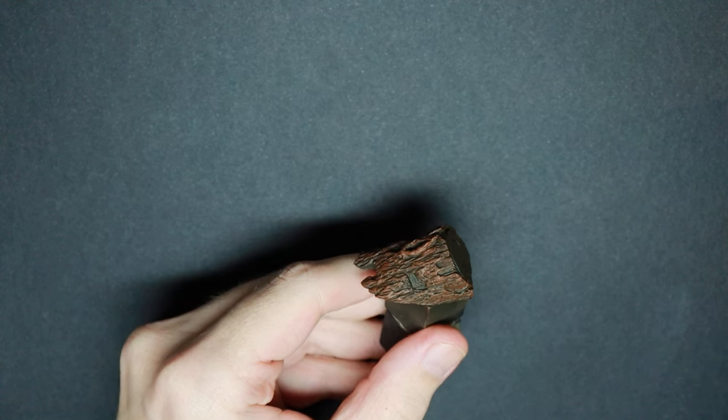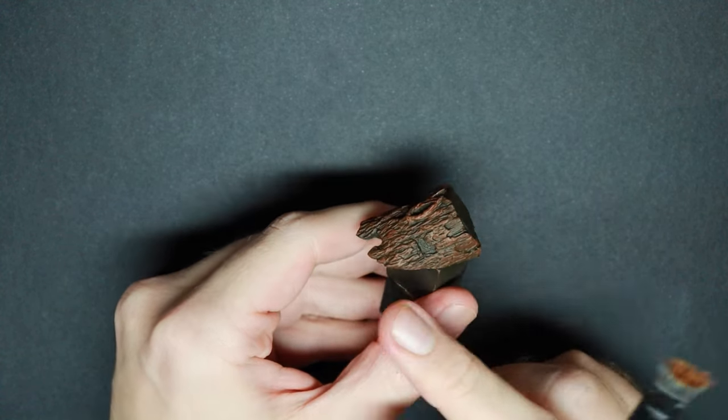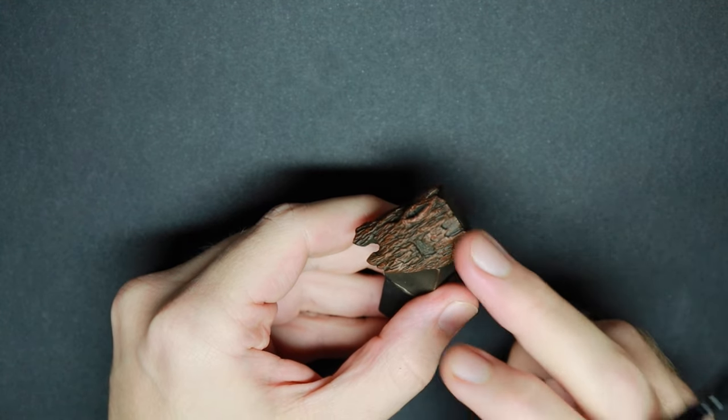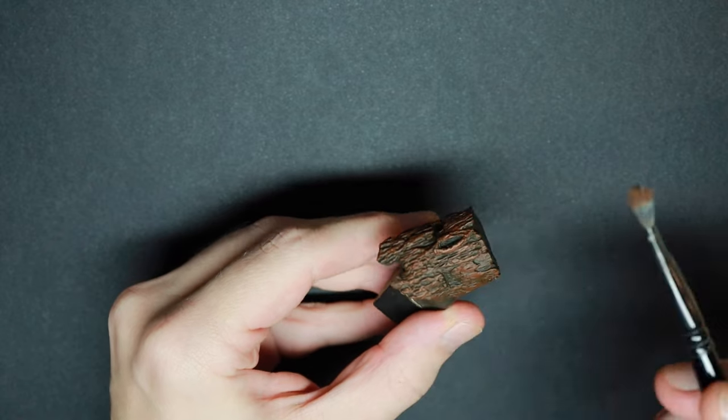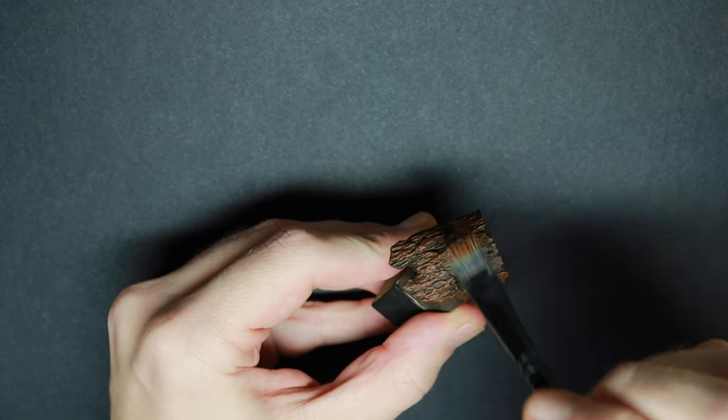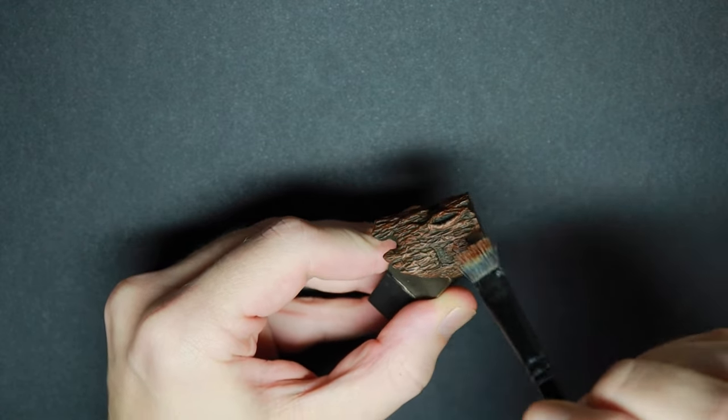On this second layer you will do a softer layer so you don't cover all the paint we have just put on. And again just lightly dry brushing.